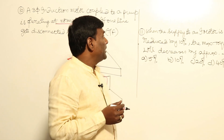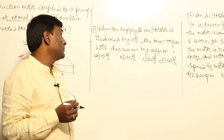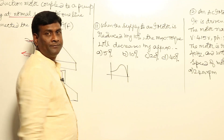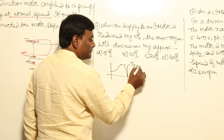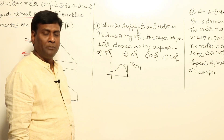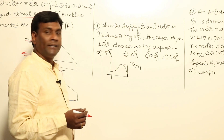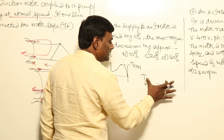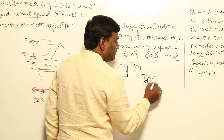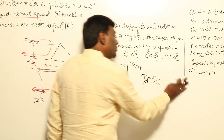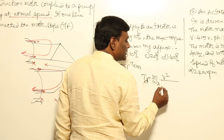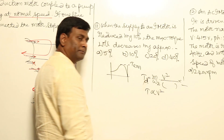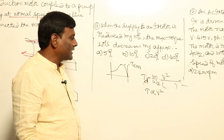Now let us see one more question: when the supply to an induction motor is reduced by 10 percent, the maximum torque will decrease by approximately how much? The torque-speed equation gives us: torque developed Td = (m / ωs) × (I2² × R2 / s). Since I2² is proportional to V1², we can directly say torque is proportional to voltage squared.